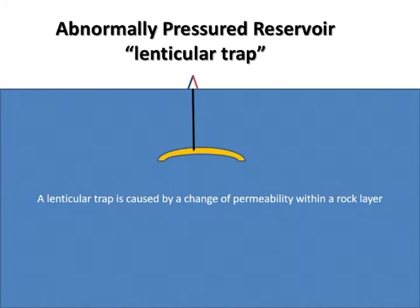This is another example of an abnormally pressured reservoir. However, unlike the Artesian effect where the sandstone outcropped at an elevation greater than the rig elevation, there is no outcrop. Thus, the pressure exerted in the reservoir is not only the result of the pressure of the fluid, but also the result of the overburden rock as it squeezes and puts pressure on the fluid inside the reservoir.